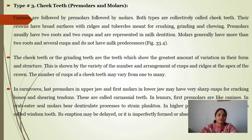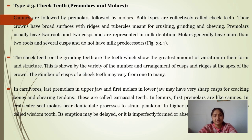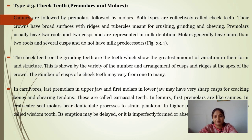The cheek teeth are premolars and molars. Premolars and molars are present after canines on the maxillae; both types are collectively called cheek teeth. Their crowns have a broad surface with ridges and tubercles meant for crushing, grinding, and chewing. Premolars usually have two roots and two cusps and are represented in the milk dentition, but molars generally have more than two roots and several cusps and do not have milk predecessors.